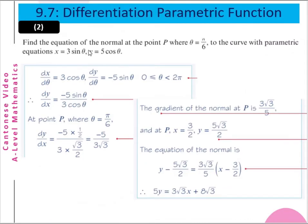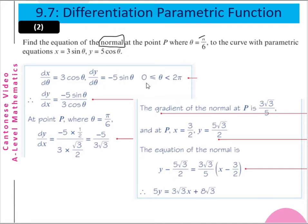Question 2: Find the equation of the normal — remember, this time we find the normal, not the tangent — at point P where θ equals π/6, to the curve with parametric equations x equals 3 sin θ and y equals 5 cos θ. dx/dθ equals 3 cos θ and dy/dθ equals minus 5 sin θ, where θ is from 0 to 2π. So dy/dx equals minus 5 sin θ divided by 3 cos θ.